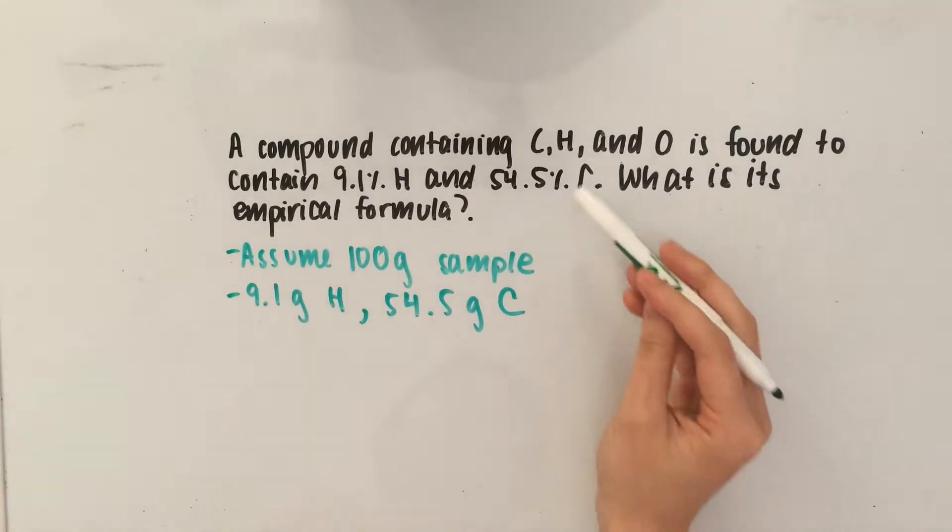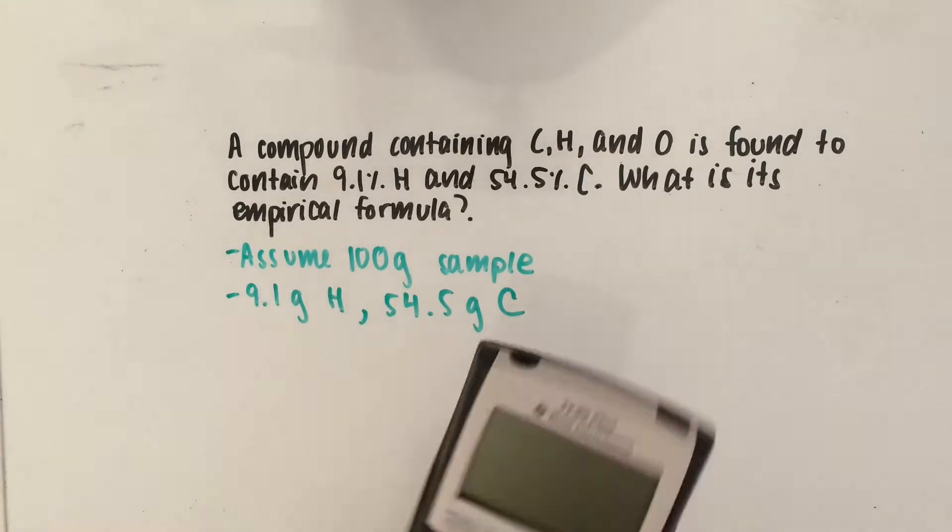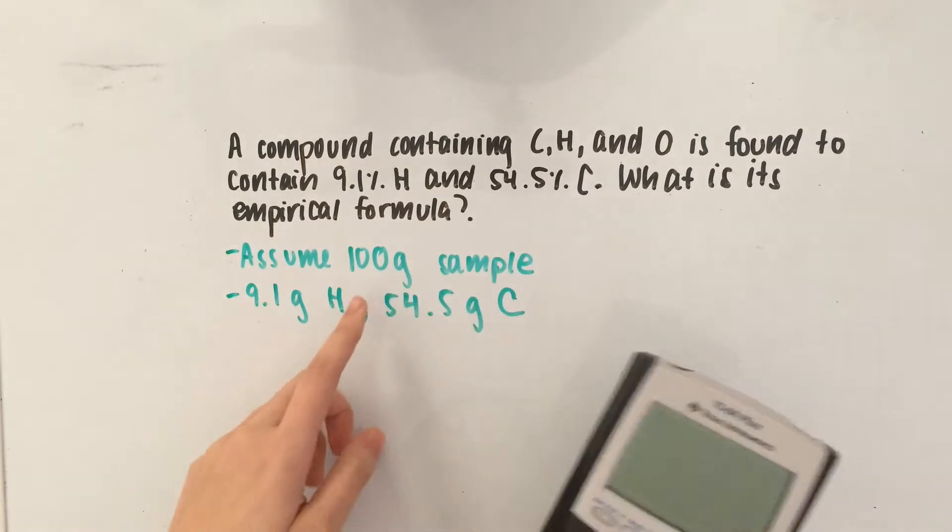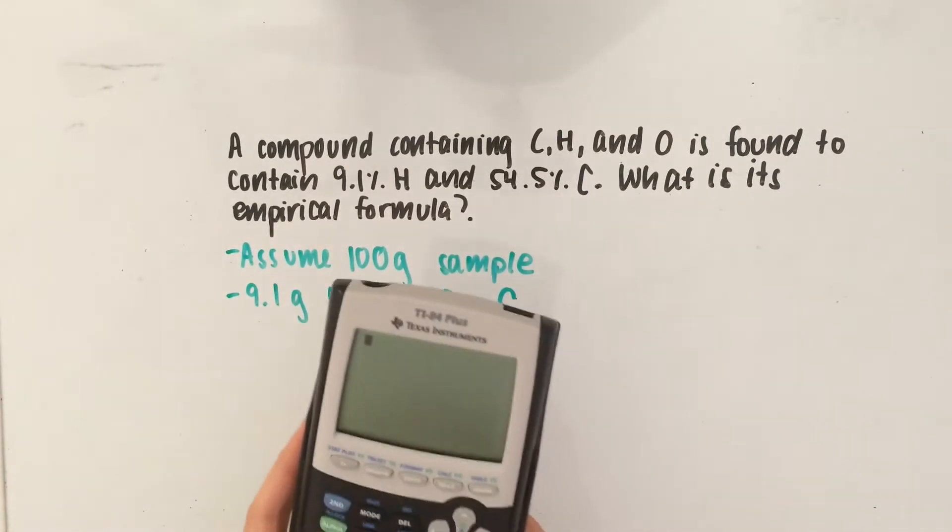Since the problem tells us that it's only carbon, hydrogen, and oxygen, then that means the rest of the sample is going to be oxygen. So, we can use 100 minus 9.1 minus 54.5 to give us the grams of oxygen.